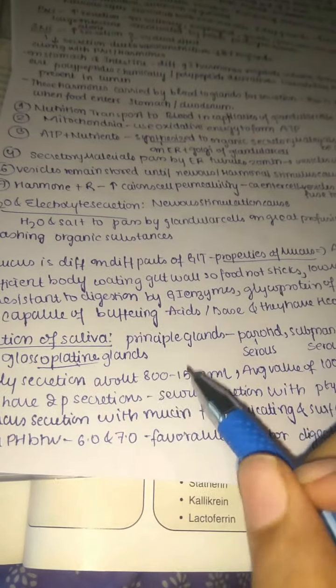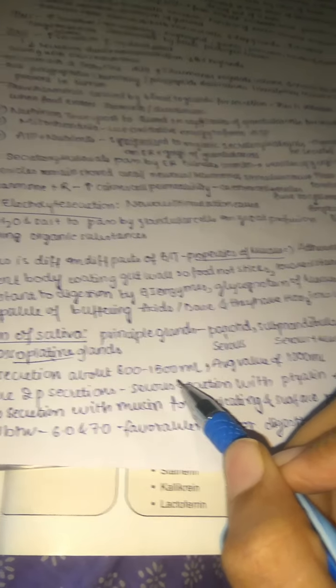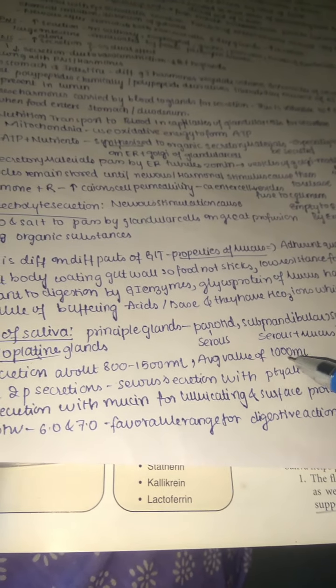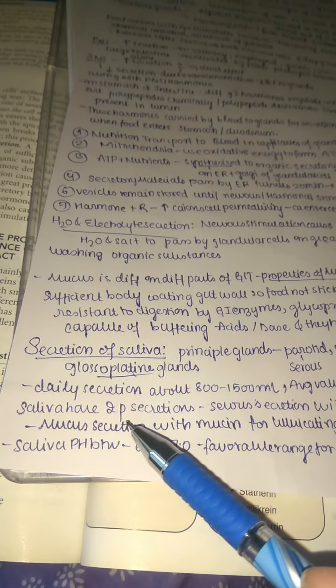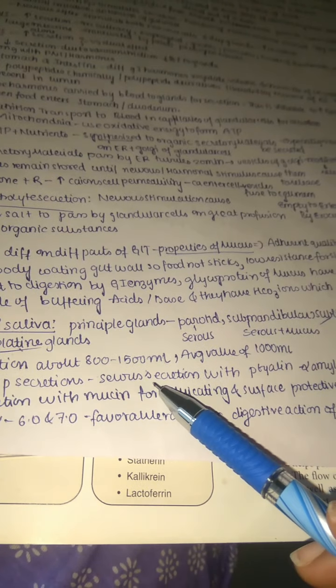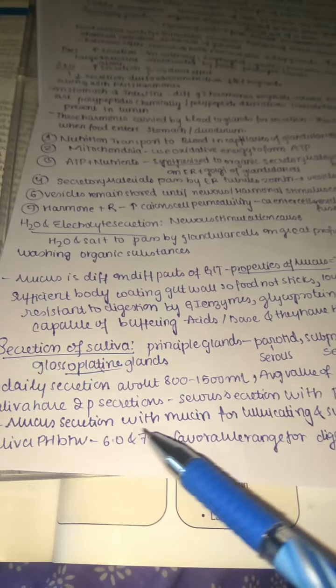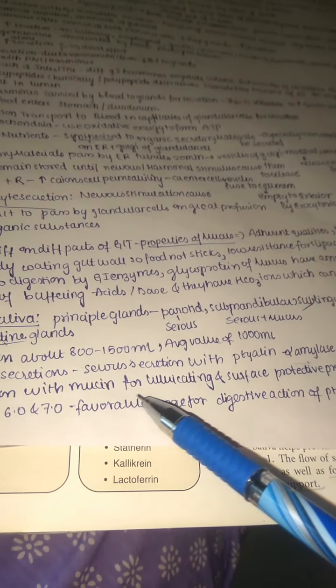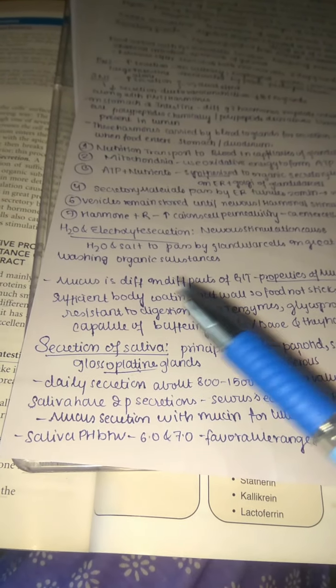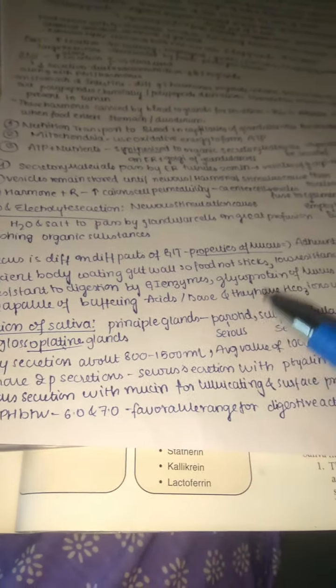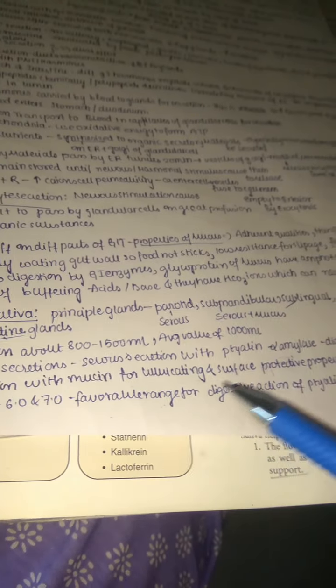The daily secretion of saliva is about 800 to 1500 milliliters, with an average of about 1000 milliliters. Saliva has two main protein secretions: serous secretion containing ptyalin — also called alpha-amylase — which mainly digests starch; and mucous secretion with mucin, which provides lubrication and surface protection. Saliva pH ranges between 6 and 7, a favorable range for the digestive action of ptyalin.